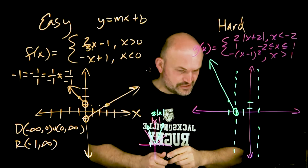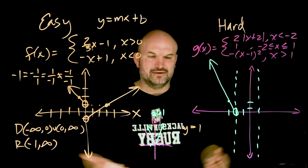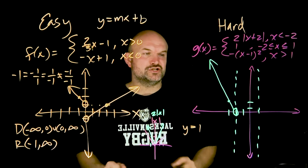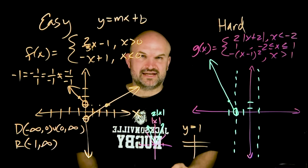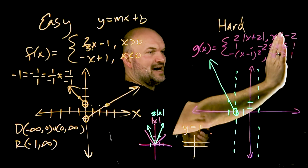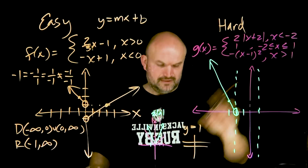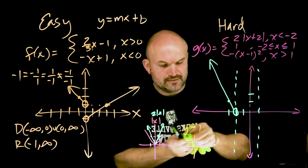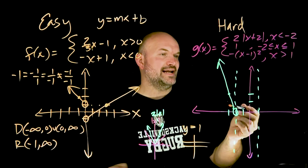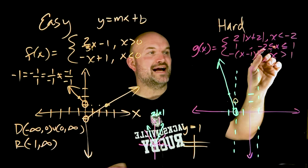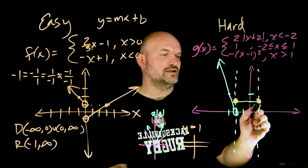The next piece is y equals one, defined between negative two and positive one. Students sometimes forget their algebra — y equals one means slope is zero, so it's just a horizontal line regardless of x. This horizontal line is only defined between the two dotted reference lines. At negative two, the restriction is less than or equal to, so that point is a closed circle. The line extends all the way to x equals one, which is also included, giving another closed circle there.